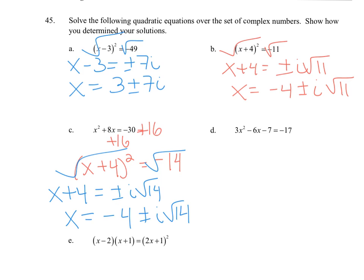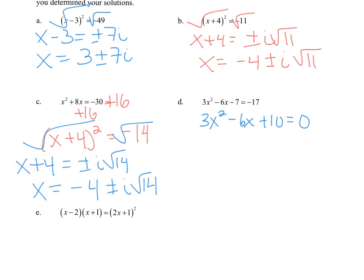For d, I'm going to add the 17. Let's see, maybe it's going to factor. 3 times 10 is 30. Does anything multiply to 30 that adds to -6? Nope. So because a is not 1, and I could complete the square if I divided everything by 3, then you'll have a fraction here. So let's use quadratic formula.